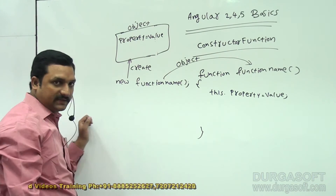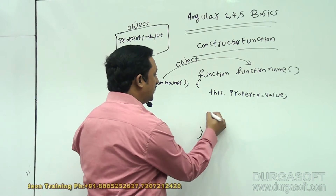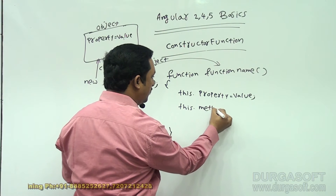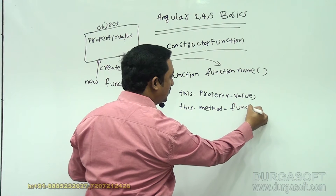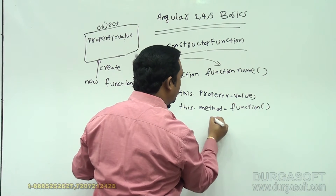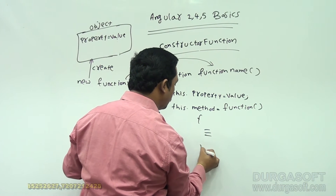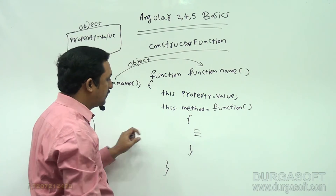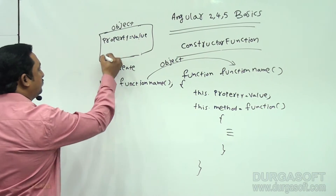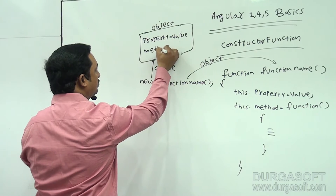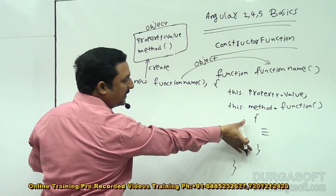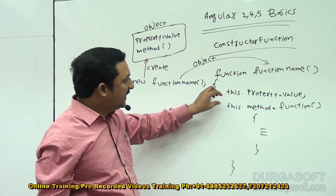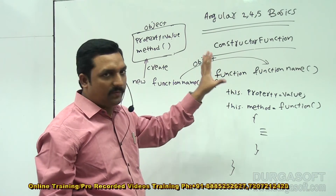Let us also write methods. this.method equals a function, which is a collection of statements. So this method will also be stored in the object. That means the complete code written here will be stored in the object, and like this we can create any number of properties and any number of methods.